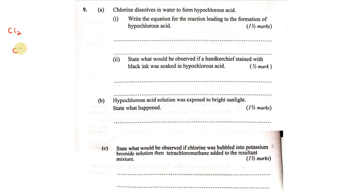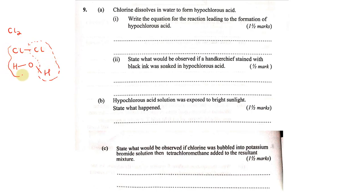We have chlorine and we also have our water molecule. So if these two react, we shall have hydrochloric acid and then the remaining will be our hypochlorous acid. So when chlorine reacts with water, we shall have hypochlorous acid and hydrochloric acid.